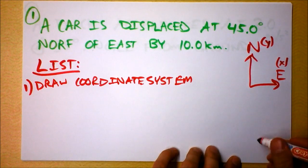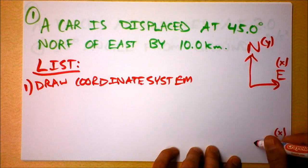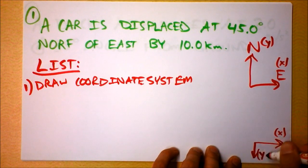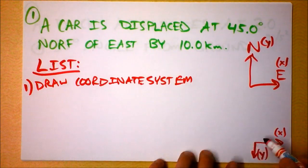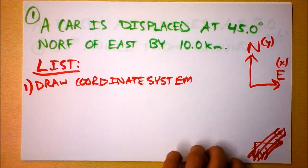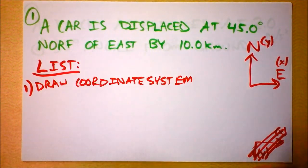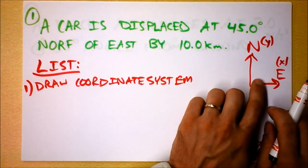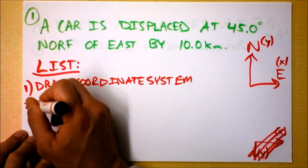Something that should not be done is drawing x over here and y pointing down — that's called a left-handed coordinate system and it's really weird. You'd only want to do that in certain circumstances; it's like looking at the world upside down. Please don't do that unless you really know what you're doing. So I've drawn my coordinate system, and my next step is to draw the vector.